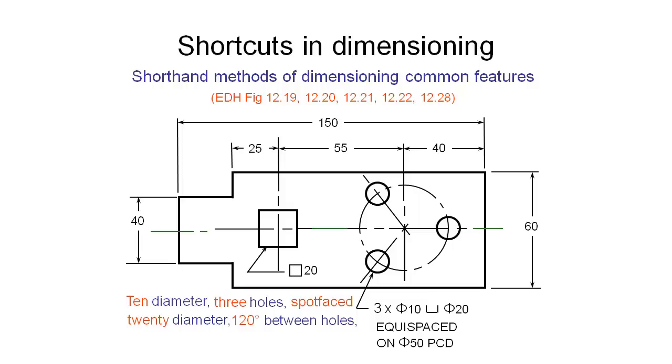And it's common to give the dimension of this circle where the holes are located when we're specifying the size of the holes. So we're saying three holes diameter 10 with spot facing out to 20 millimeters. They're equally spaced on a diameter of 50 millimeters pitch circle.